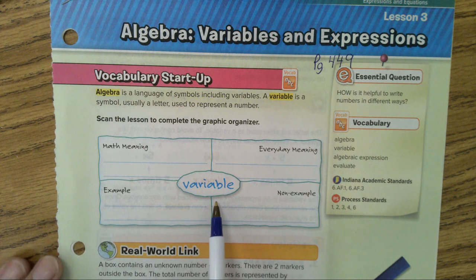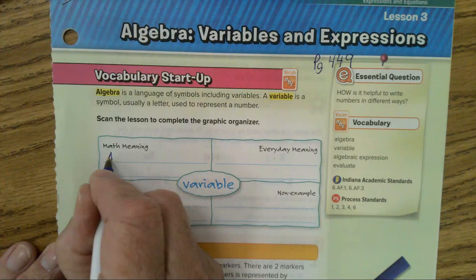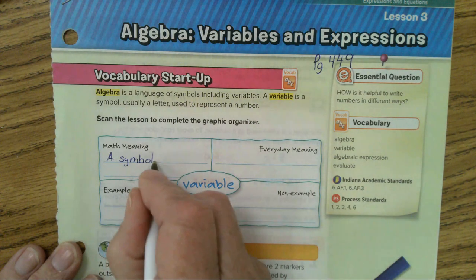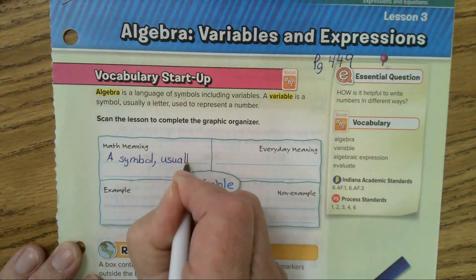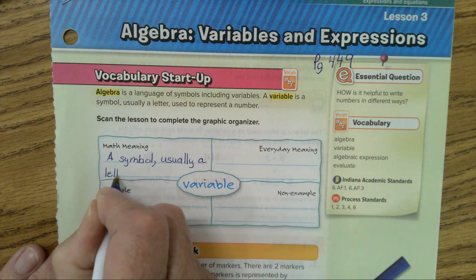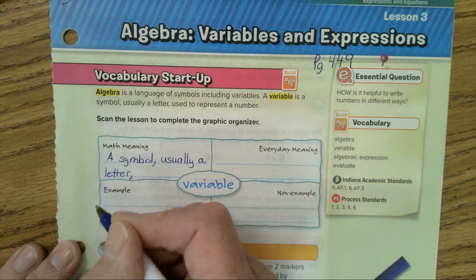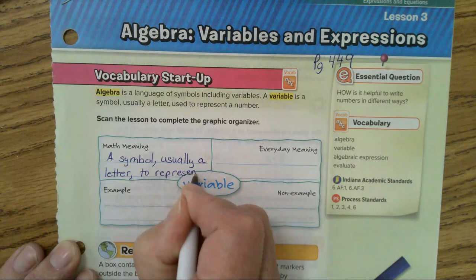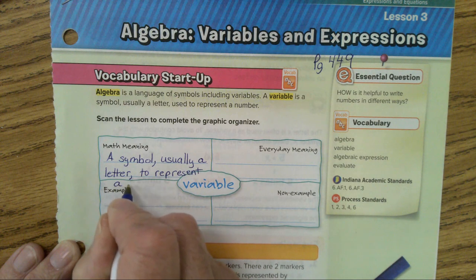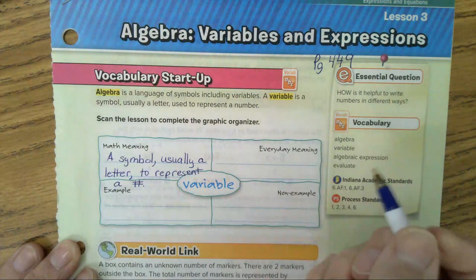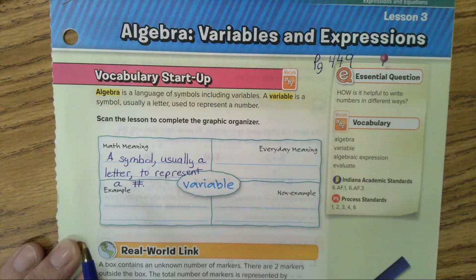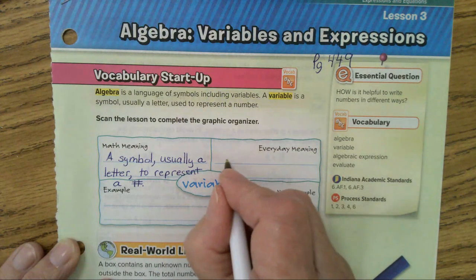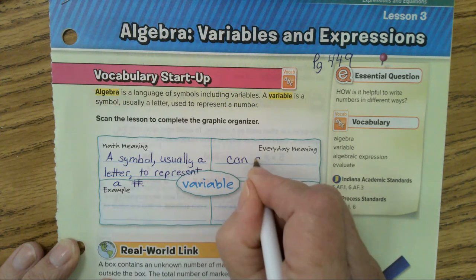Well, the technical math meaning of a variable is, and please write this down, a symbol, usually a letter, to represent a number. Not a whole lot of space. Represent a number. Math meaning, a symbol, usually a letter, to represent a number. Everyday meaning. A variable means it's able to change. Variable can change. The value can change. That's what the word variable means. It could vary.